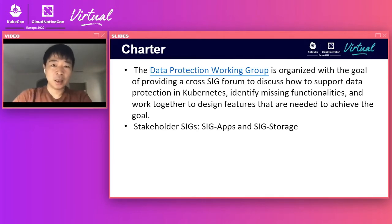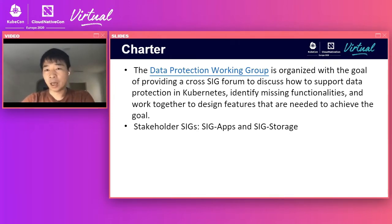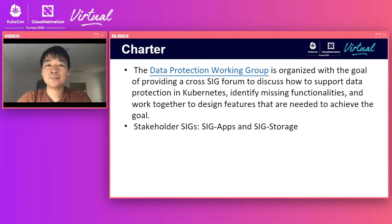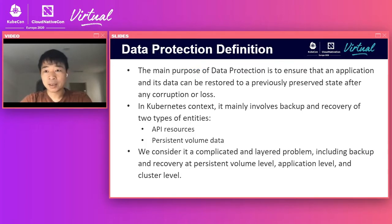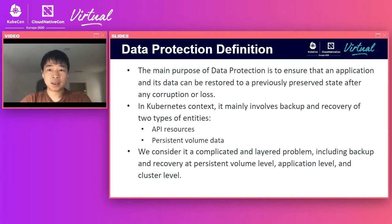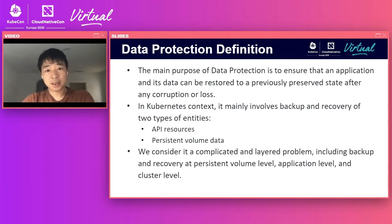In the following 10 to 15 minutes, I will walk you through the definition of data protection in this working group and the problems we are looking to solve. Data protection in the industry can easily refer to protecting data from compromise and ensuring data privacy. Or it also refers to ensuring that data and the application are protected such that they could be quickly restored and recovered into any previously saved state whenever there's data loss or corruption. In this working group, we focus on the latter in the Kubernetes environment.